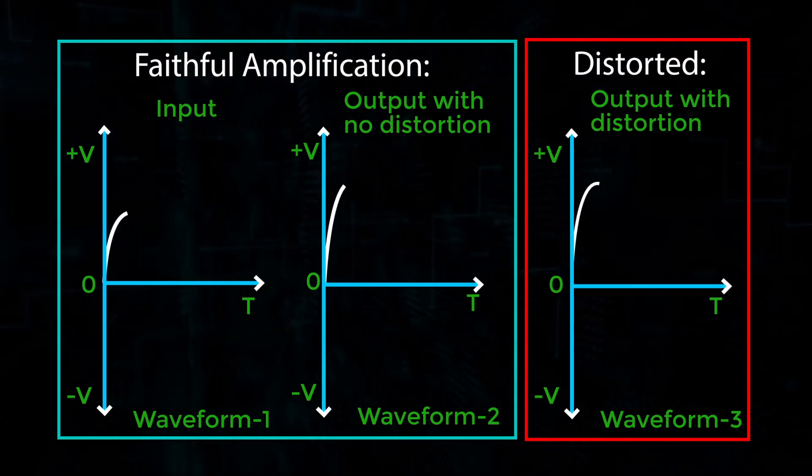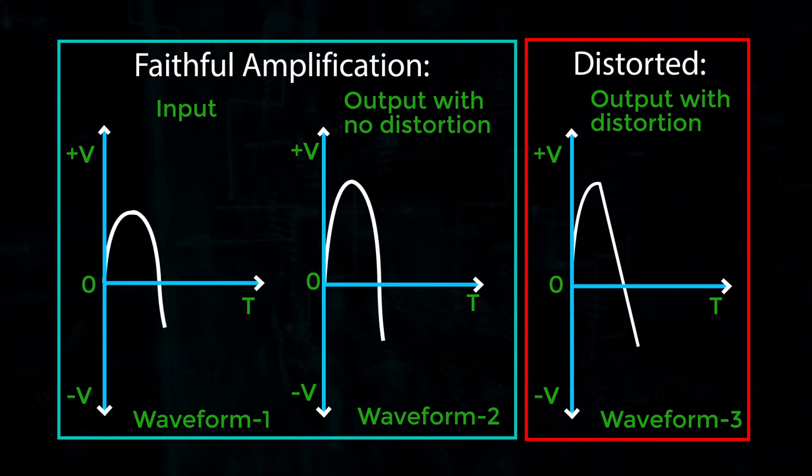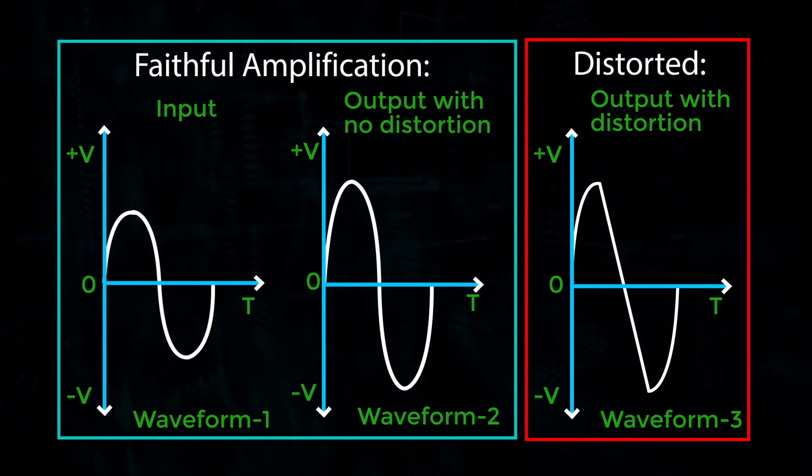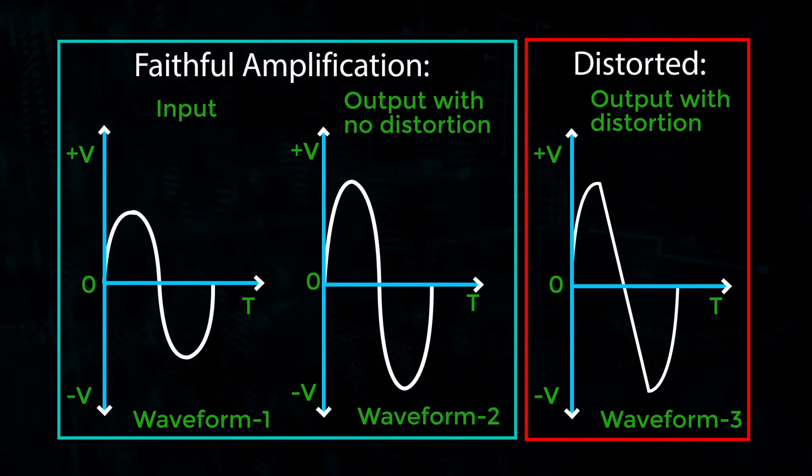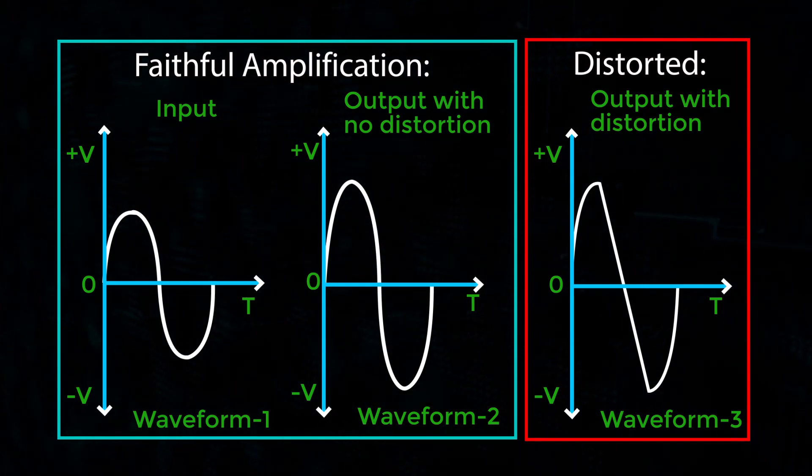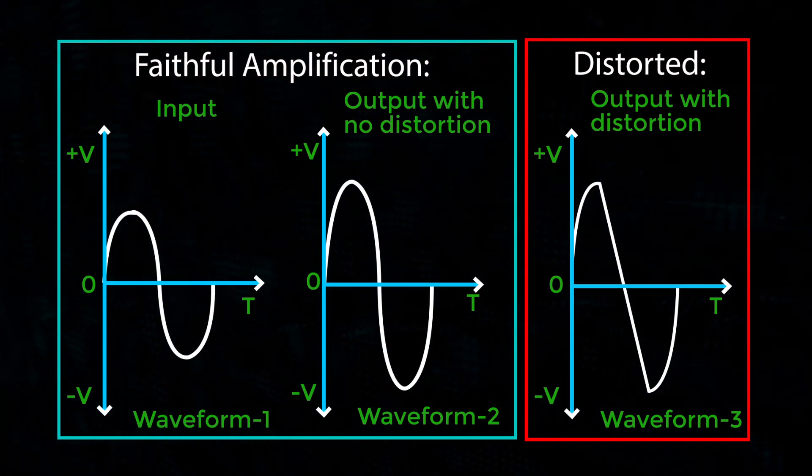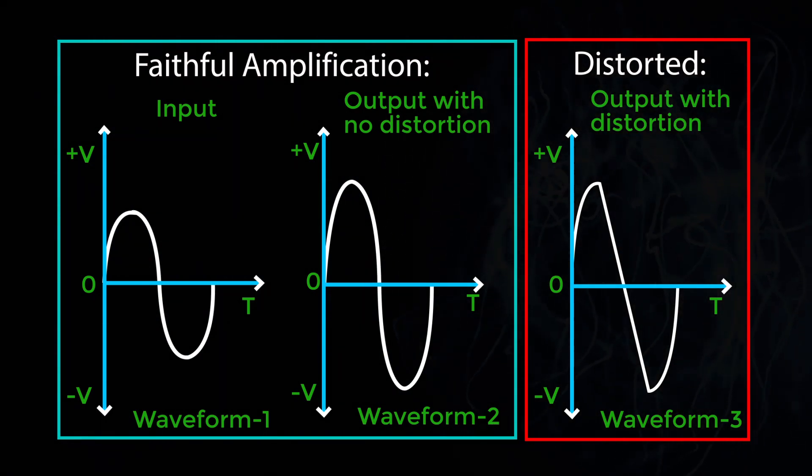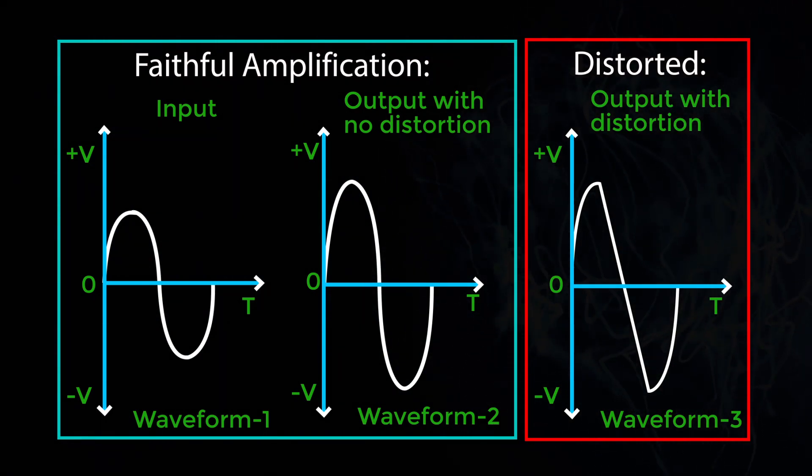The figure shows faithful amplification and distorted amplification. In the figure, you can see that every point in the input waveform, waveform 1, is exactly reproduced in the non-distorted output waveform 2, and the falling edges of the input waveform are unfaithfully reproduced in the distorted output waveform 3.